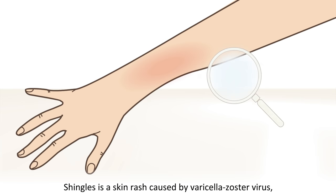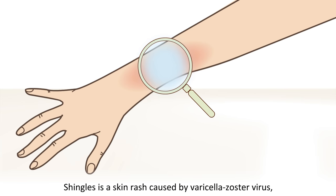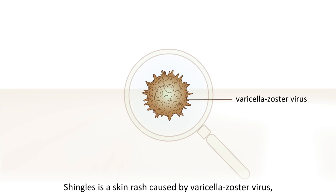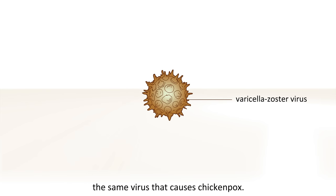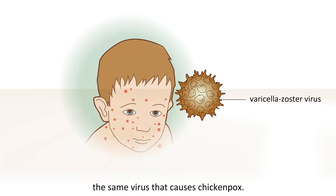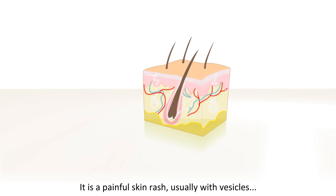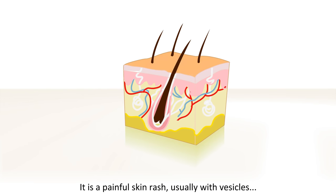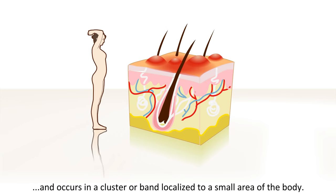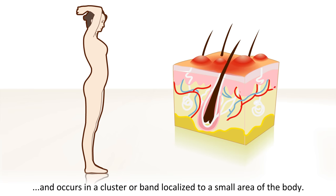Shingles is a skin rash caused by varicella zoster virus, the same virus that causes chickenpox. It is a painful skin rash, usually with vesicles, and occurs in a cluster or band localized to a small area of the body.